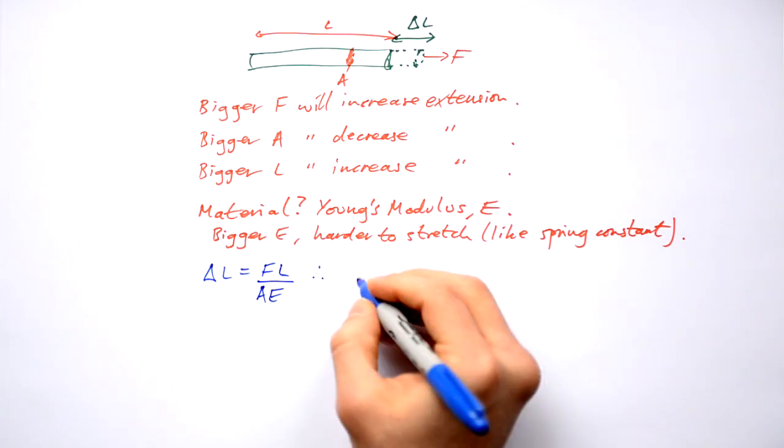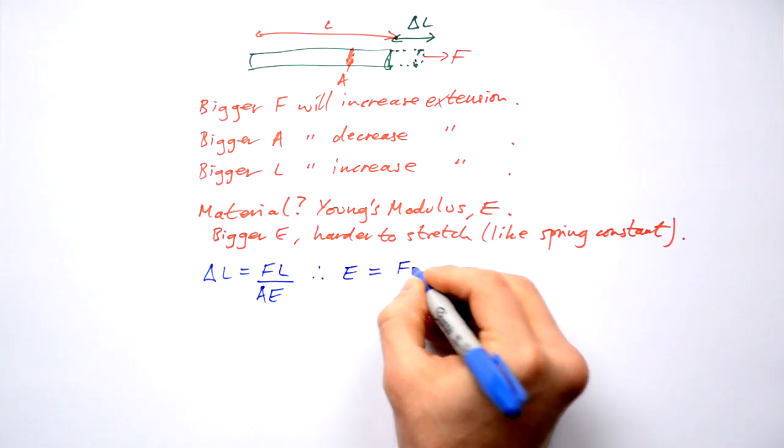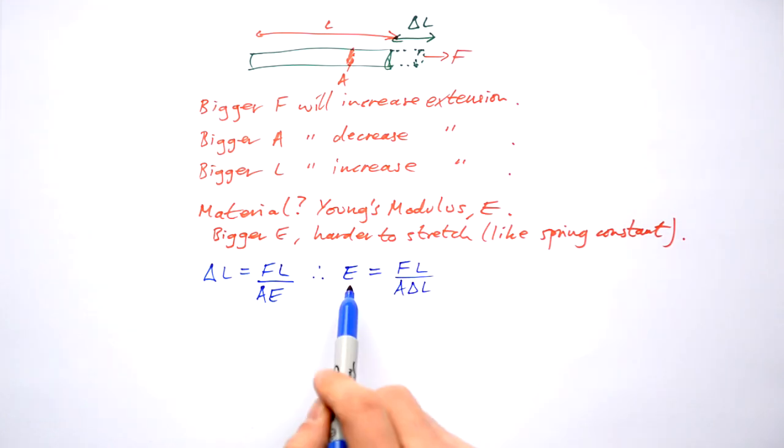What we're going to do is rearrange this for the Young's modulus E. We can measure the Young's modulus of a material by measuring the force applied, its original length, the cross sectional area and how far it's extended as well.